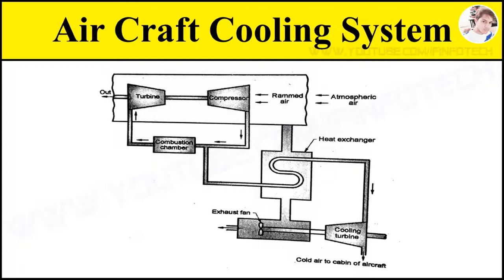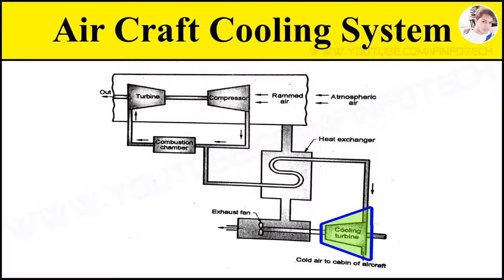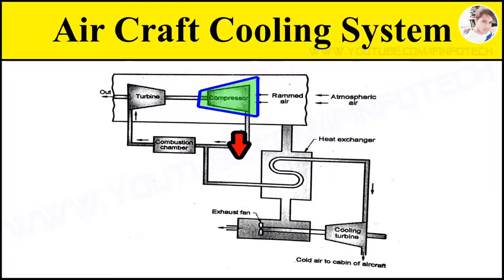Working of Aircraft Refrigeration System. The figure shows a simple aircraft cooling system which consists of an air-to-air heat exchanger and cooling turbine. The air required for the refrigeration system is bled off from the main compressor.